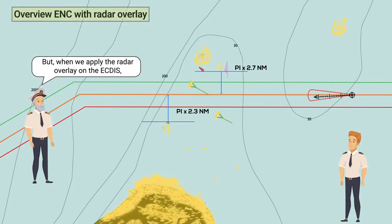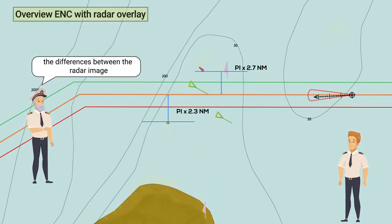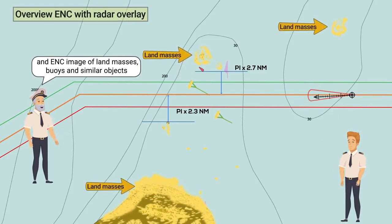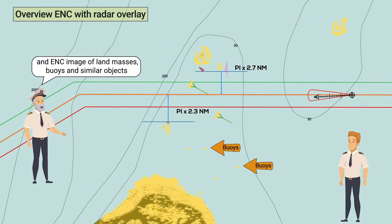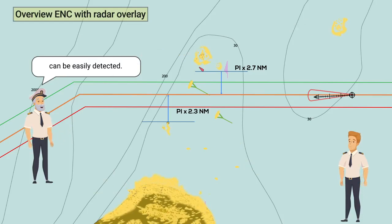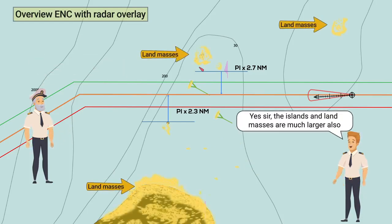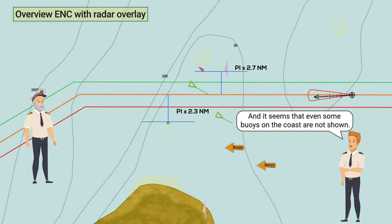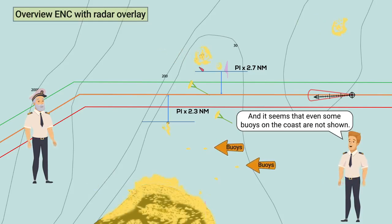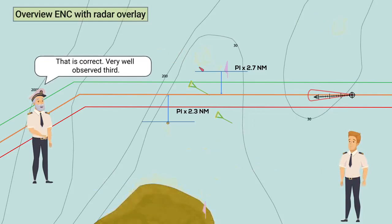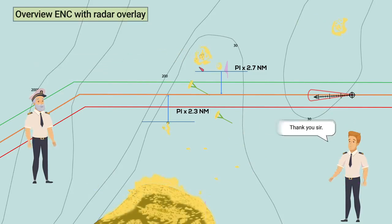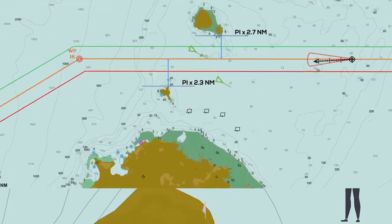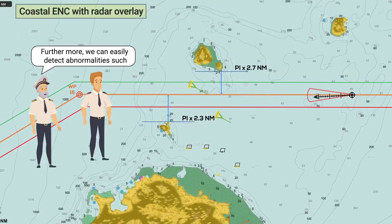Yes sir. But when we apply the radar overlay on the ECDIS, the differences between the radar image and ENC image of land masses, buoys, and similar objects can be easily detected. Yes sir, the islands and land masses are much larger. Also, their position is not aligned with the overview ENC, and it seems even some buoys on the coast are not shown. That is correct. Very well observed, Third.